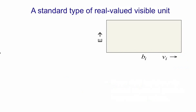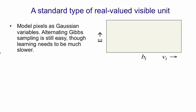The obvious thing to use is a linear unit with Gaussian noise. So we model pixels as Gaussian variables. We can still use alternating Gibbs sampling to run the Markov chain required for contrastive divergence learning. But we need to use a much smaller learning rate, otherwise it will tend to blow up.